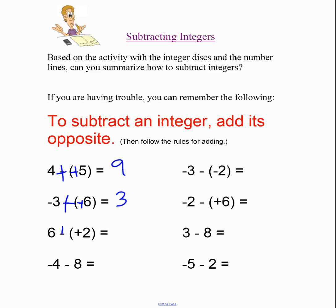This one, I'm going to add, what's the opposite of positive 2? Well, I'm going to add negative 2. What actually happens here is 6 plus negative 2 becomes 4.